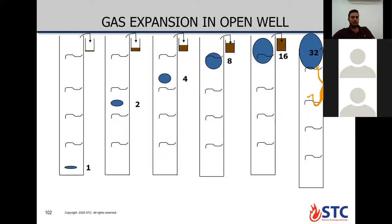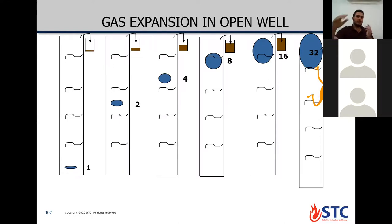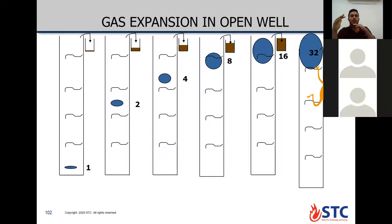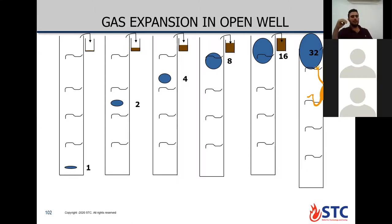Starting with one barrel of gas influx, it becomes two barrels, four barrels, eight barrels, sixteen barrels, then thirty-two barrels at the surface. Imagine how much volume increases from one to thirty-two — your volume has been doubled many times. As volume increases, pressure decreases — so your pressure at the surface will decrease to one thirty-second. This is what we see during circulating a gas influx: allow volume to expand so pressure decreases, not to break the formation in any case.